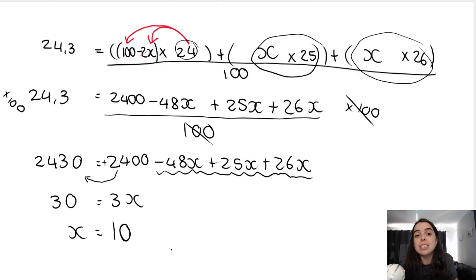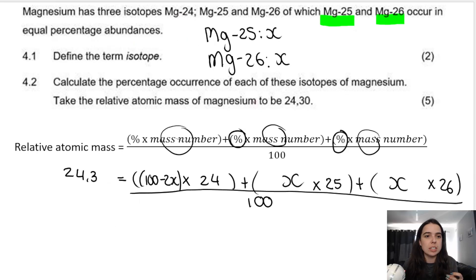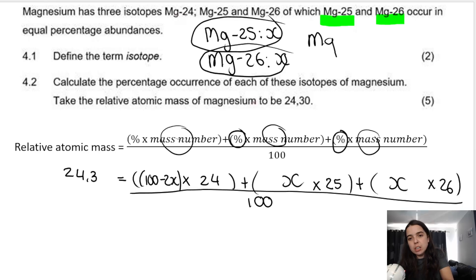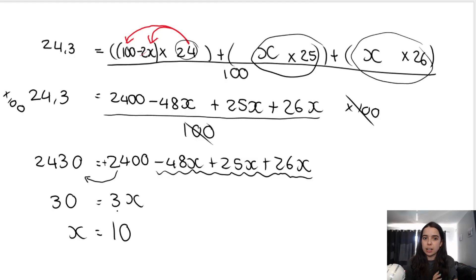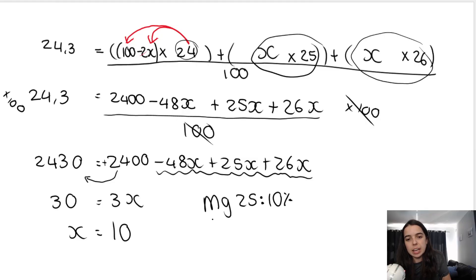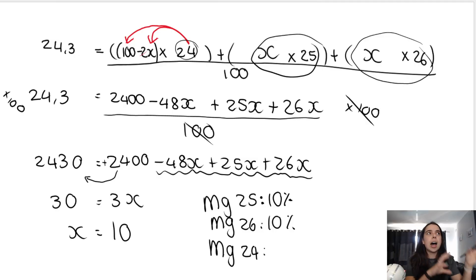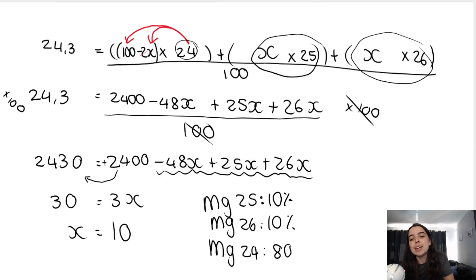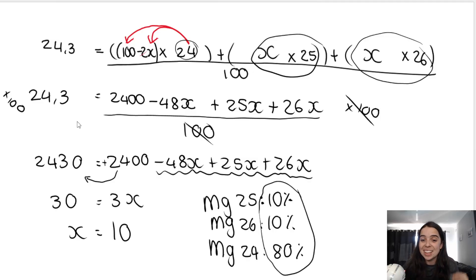Dividing by 3, x = 10. Remember: we called Mg25 = x and Mg26 = x, and Mg24 = 100 − 2x. Therefore: Mg25 is 10% abundance, Mg26 is 10% abundance, and Mg24 is 100 − 2(10) = 80% abundance. Adding these three percentages gives 100, which confirms the answer is correct.